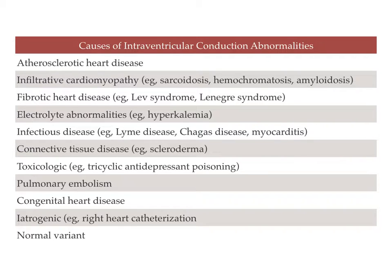Some typical causes of intraventricular conduction abnormalities include atherosclerotic heart disease, infiltrative cardiomyopathies such as sarcoidosis and amyloidosis, fibrotic heart disease, congenital conditions, electrolyte abnormalities such as hyperkalemia, infectious diseases such as Lyme disease and Chagas disease, connective tissue diseases such as scleroderma, toxicologics such as TCA poisoning, pulmonary embolism, and iatrogenics such as right heart catheterization. There are also normal variants.